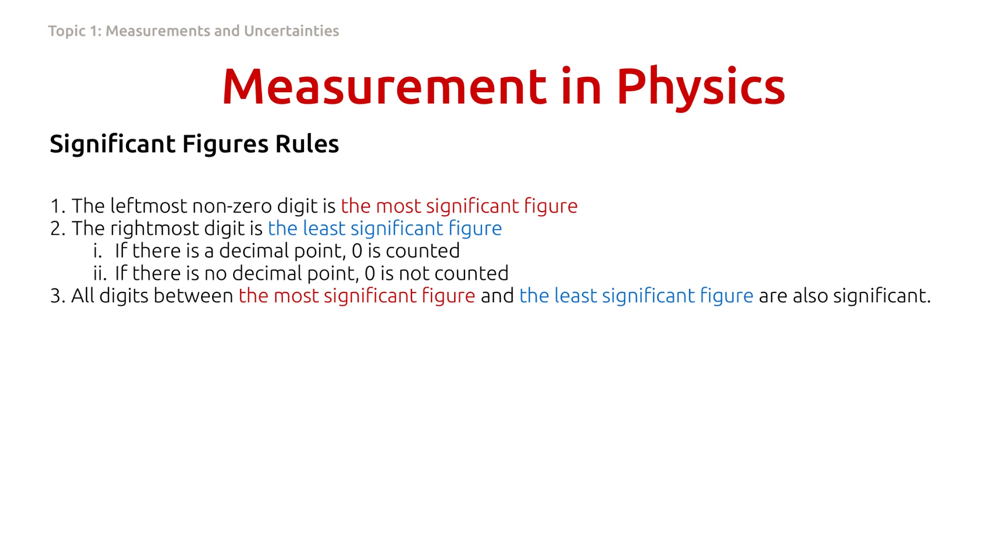Rule number two, the rightmost digit is the least significant figure. And as far as the rightmost digit is concerned, if there is a decimal point, the rightmost zero is counted. And if there is no decimal point, the rightmost zero is not counted.